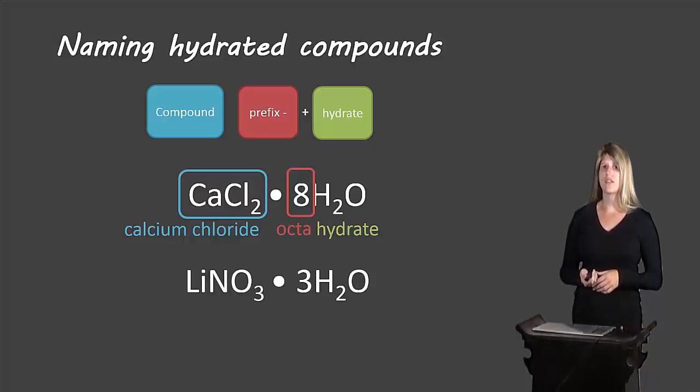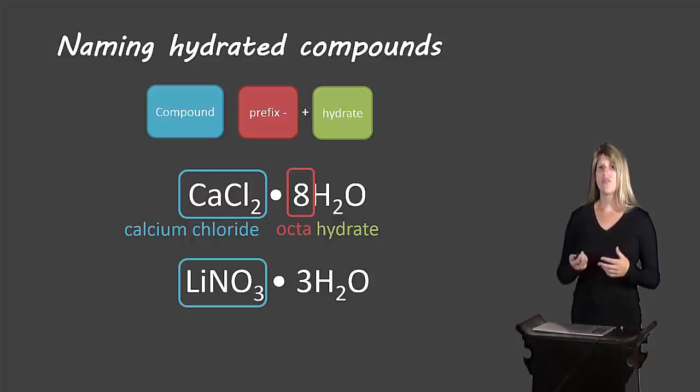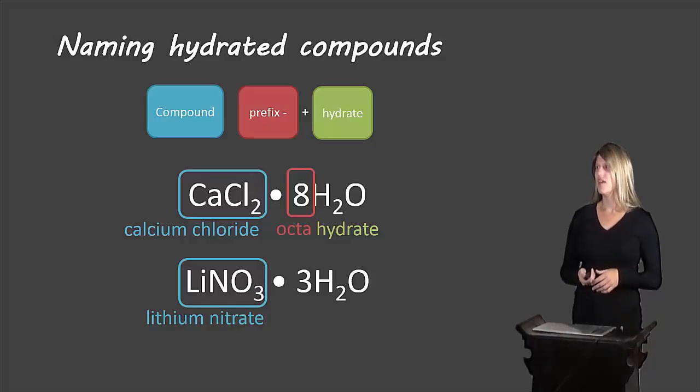Let's take a look at another example. Our compound is LiNO3 and from our rules with polyatomic compounds we know that this is going to be called lithium nitrate. Then we look at the number in front of the water which is three. We know the prefix for three is tri and then we write the word hydrate. So we end up with lithium nitrate trihydrate.